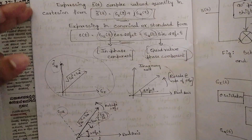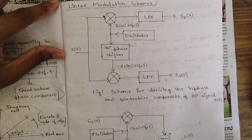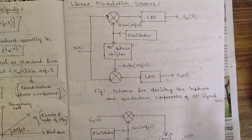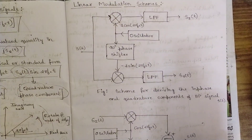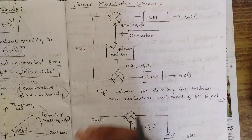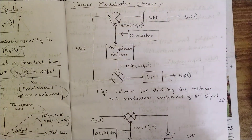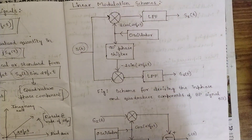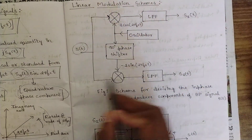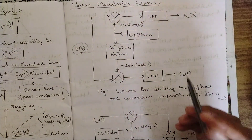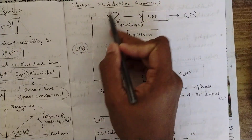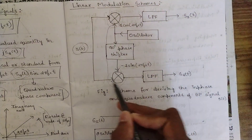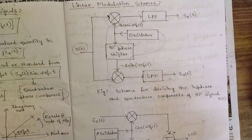The next topic is linear modulation schemes. Till now we have discussed the Hilbert transform and the pre-envelope canonical representation of band pass signals. Now we combine these using a simple block diagram to show what outputs are produced when the input is given as a pre-envelope. The input given is s(t), the pre-envelope, and it is multiplied through a low pass filter, where the interrelationship between all signals takes place.